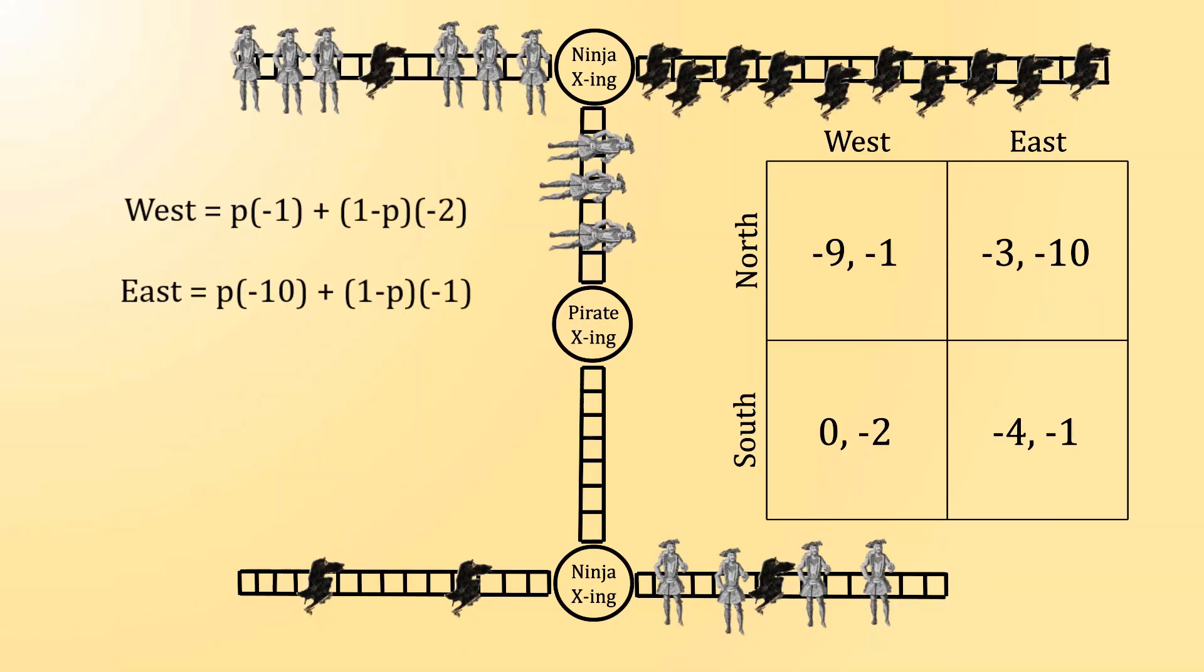On the right side of the trolley tracks, the ninja's payoff for going east is going to be negative 10 with probability p, because in that circumstance the pirate is going north, and negative 1 with probability 1-p, because under that circumstance the pirate is going south.